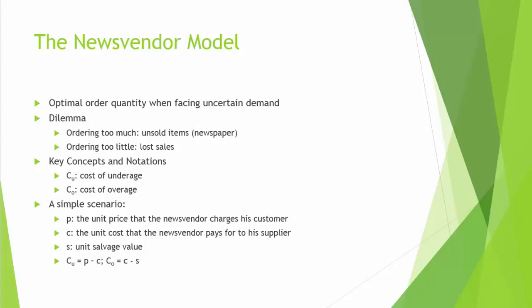The other scenario is that you do not order enough copies — that is, the actual demand is more than your order quantity Q. In this second scenario, your cost is actually an opportunity cost: you've lost the opportunity for making more profit. For each potential customer that does not find a copy available, your loss would be the profit margin P minus C. This cost is denoted by CU, typically called underage cost or understocking cost. Your responsibility is to find the order quantity that strikes a nice balance between the overage cost CO and underage cost CU.